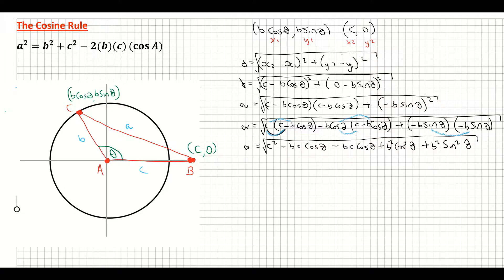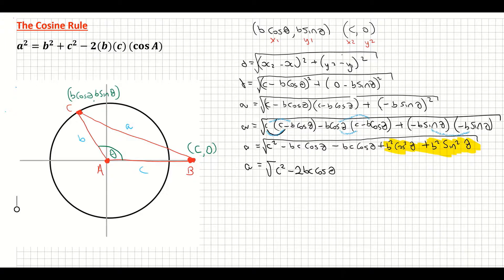Tidying up: grouping the two −BC cos theta terms gives −2BC cos theta. For the remaining terms, both have B squared, so factorizing gives plus B squared times (cos squared theta plus sine squared theta). Multiplying B squared back in would recover B squared cos squared theta plus B squared sine squared theta — all within the square root.